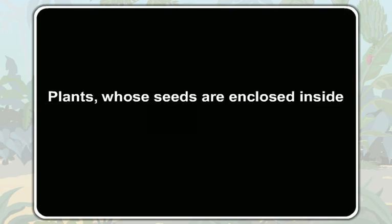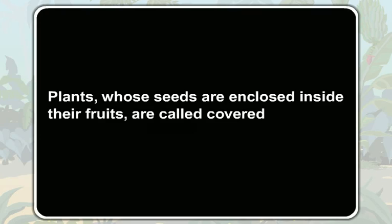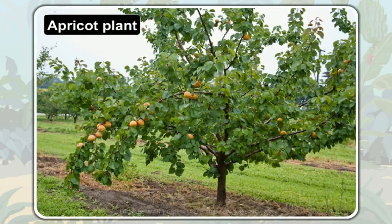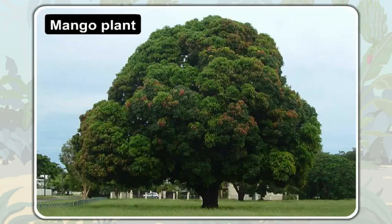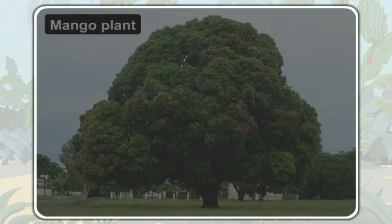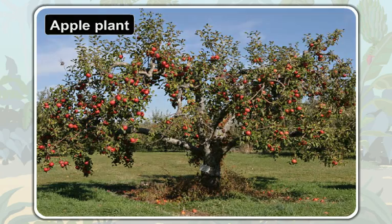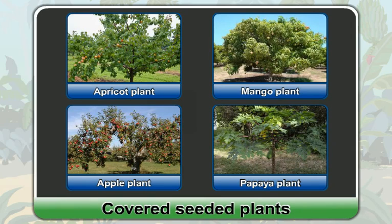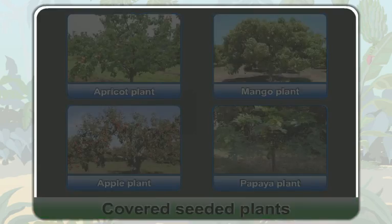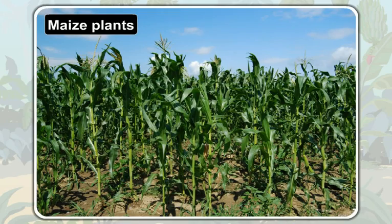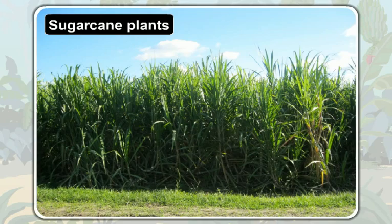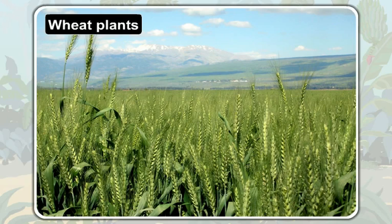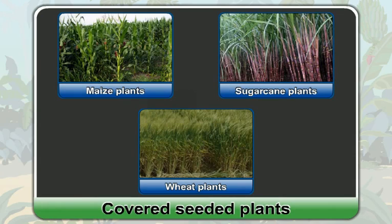Plants whose seeds are enclosed inside their fruits are called covered seeded plants. So, an apricot plant, a mango plant, an apple plant, and a papaya plant are covered seeded plants. Maize plants, sugarcane plants, and wheat plants are also covered seeded plants.